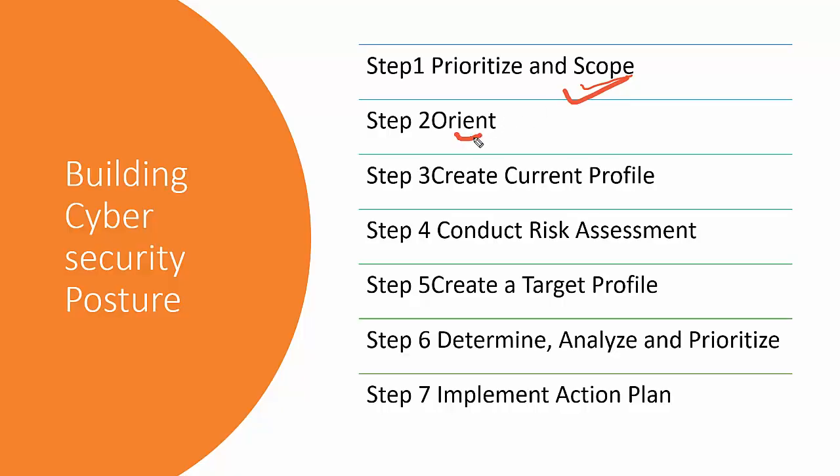The second step is Orient. In the orientation stage, the organization is given an opportunity to identify threats and vulnerabilities of the systems identified in the prioritize and scope step. We also identify requirements to define the current state. Specifically, we identify legal and regulatory requirements, the overall risk approach the company will take, and current threats and vulnerabilities. Outputs from this stage include threat information, risk assessments, current profiles, service agreements, and availability data.